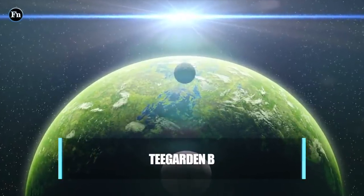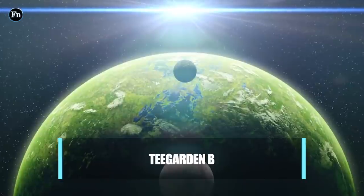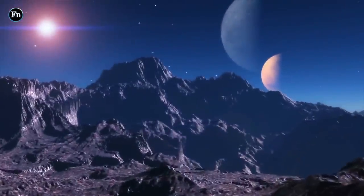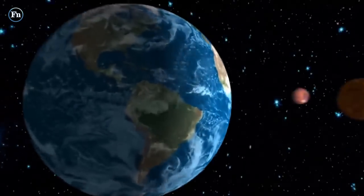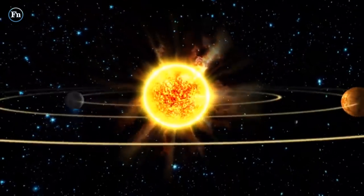Number 6: Teegarden b. To be exact, not only one but two planets close to each other can be inhabited. A pair of researchers has found evidence that suggests two of Teegarden star's planets are the most Earth-like yet found.